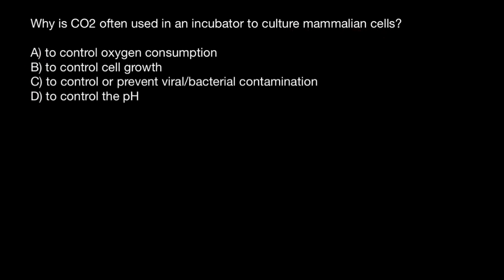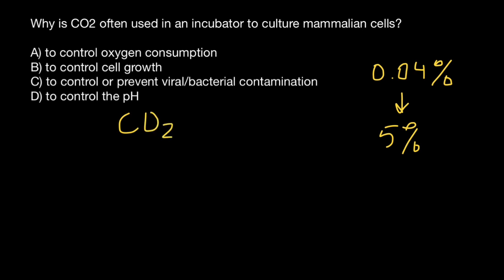Here's a variance to choose from. Our atmosphere contains about 0.04% of the CO2, but our blood contains about 5% of the CO2 or carbon dioxide. The importance of the CO2 in mammalian cell culture is the same as in our blood. The majority of the carbon dioxide in our blood exists in the form of bicarbonate, HCO3⁻.